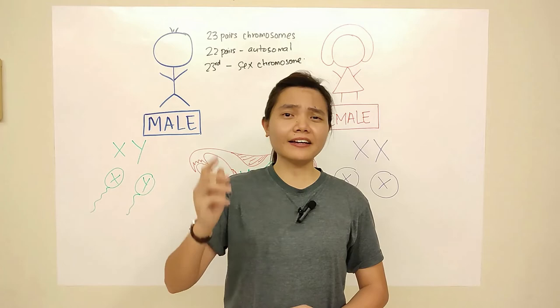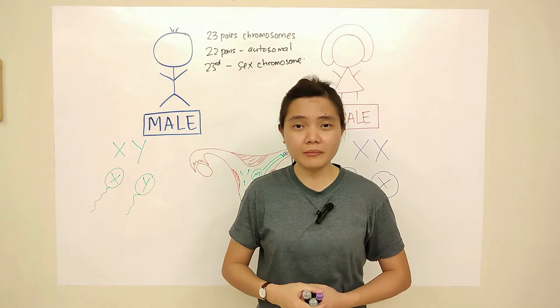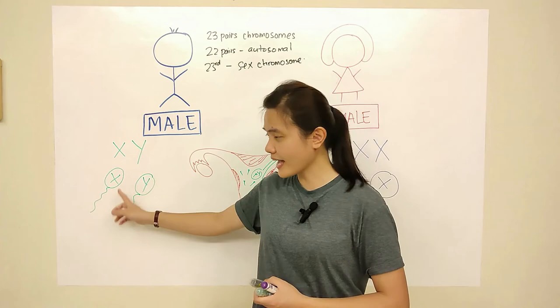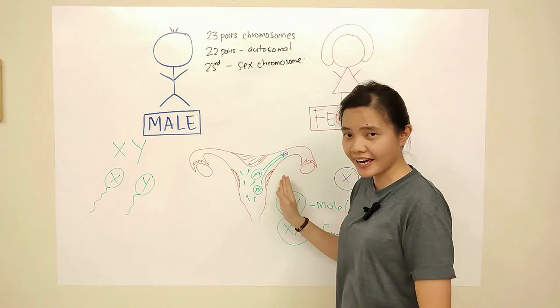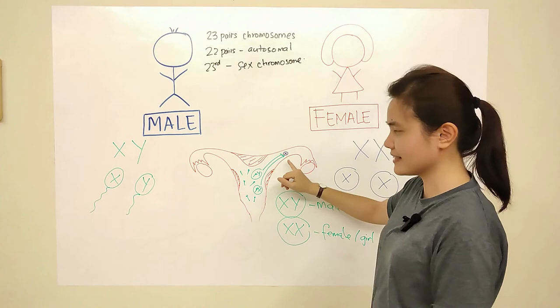So back to our earlier question: which parent determines the baby's gender? The answer is the father, because the father carries both X and Y, while the mother carries only X. It depends on which sperm fertilizes the egg — X sperm gives a baby girl, Y sperm gives a baby boy.